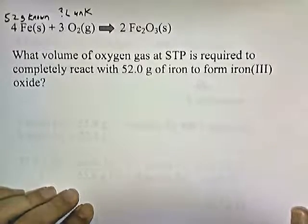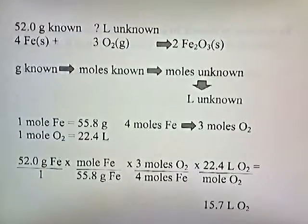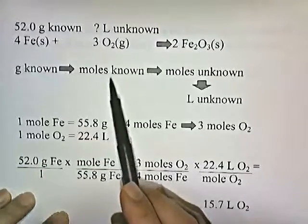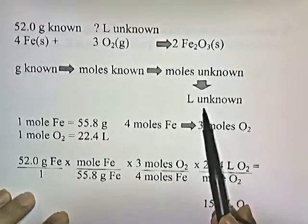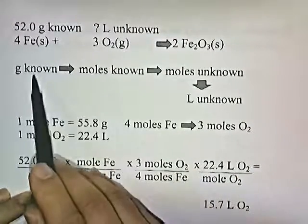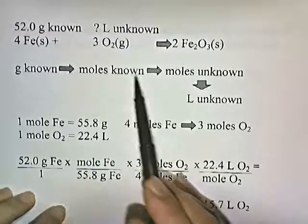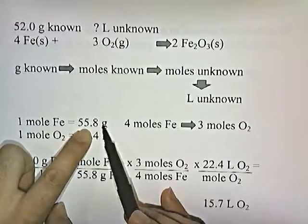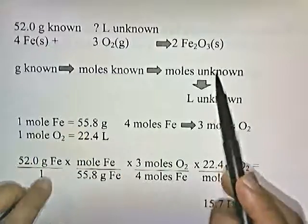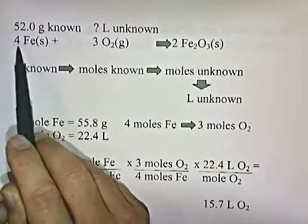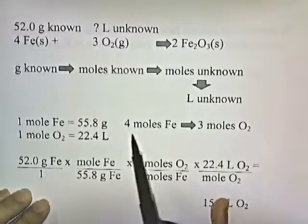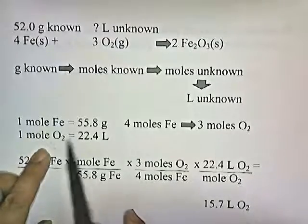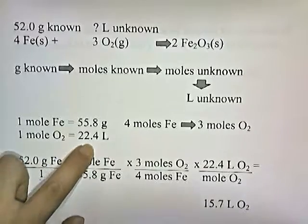We're going to go from grams of known, convert to moles of known, then go from moles of known to moles of unknown, and then convert to liters of unknown. To convert from grams of known to moles of known, one mole of iron is 55.8 grams. To go from moles of known to moles of unknown, the ratio of iron to oxygen is 4 to 3. To go from moles of unknown to liters of unknown, one mole of any gas at STP is 22.4 liters.